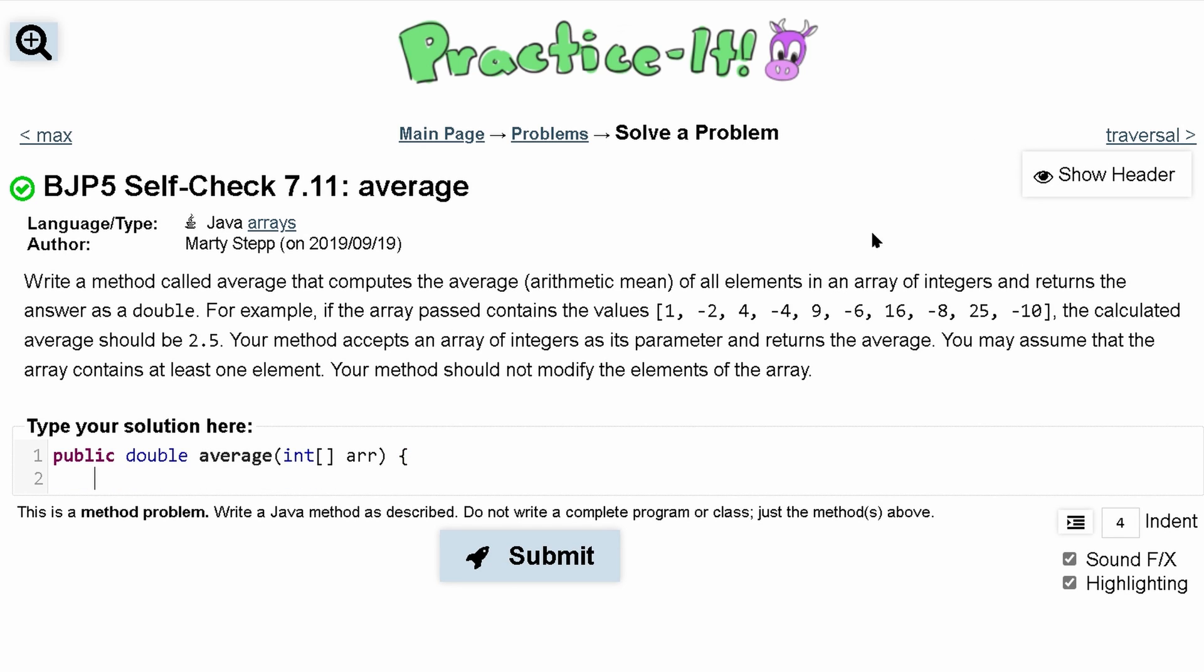Inside here we need some kind of variable to store this value, so we'll say double, we'll call it av, and it's equal to zero.